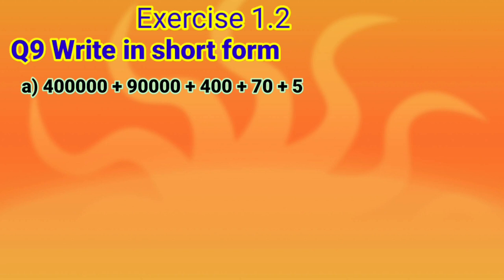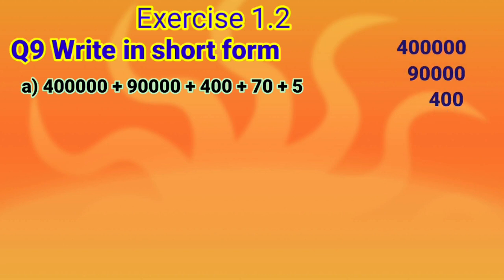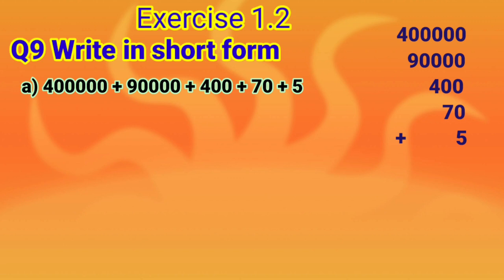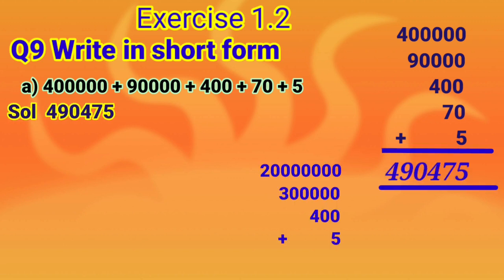Here we have 4 lakh plus 90,000 plus 400 plus 70 plus 5. We have all the place values of all these digits. Now let's write the number in short form by adding all these numbers. On adding them, the result is 4,90,475. This is how to write the expanded form of a number in short form.